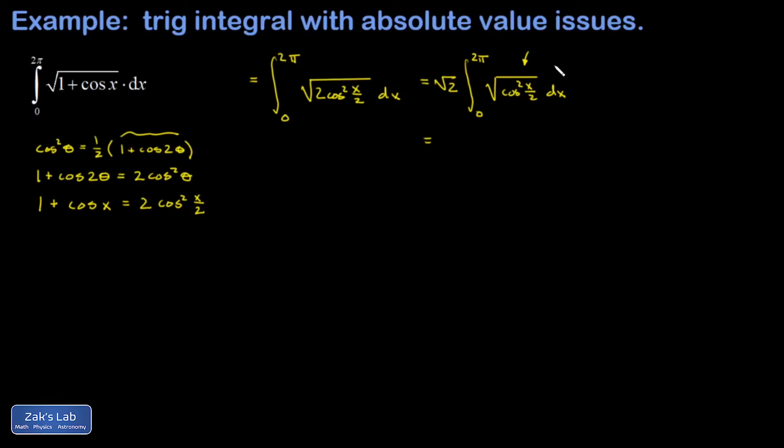And the cosine function will be positive here as its argument goes between 0 and pi over 2. That means x goes between 0 and pi. So we're going to break this into two integrals and the first one goes from 0 to pi and that's where the cosine of x over 2 is always positive. So the square root of cosine squared is just cosine.